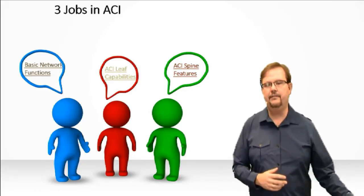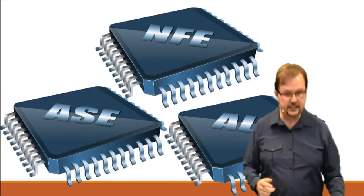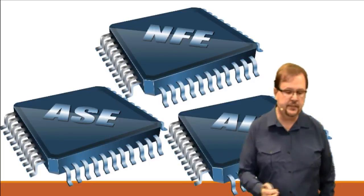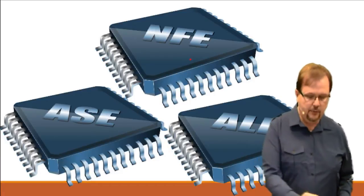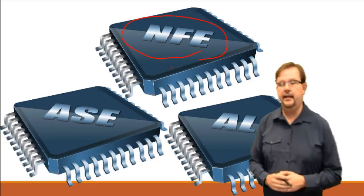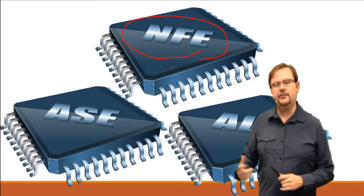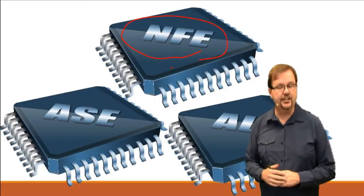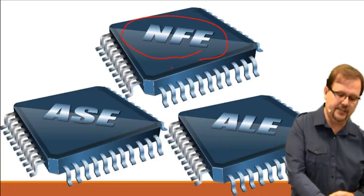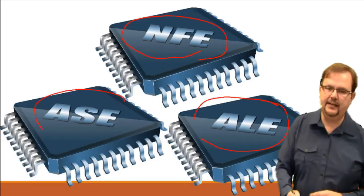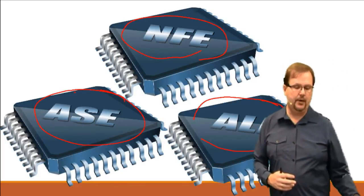So what type of ASICs do we have in our ACI environment? We have a few here. We'll be talking about each of them and their functionality. We see the NFE — our Network Forwarding Engine. Cisco typically develops all their own ASICs in-house, but for this one we actually use a third party: the Broadcom Trident 2. We'll also look at some custom ASICs from Cisco — the Application Leaf Engine and the Application Spine Engine — and how these work together to provide the fabric we want.